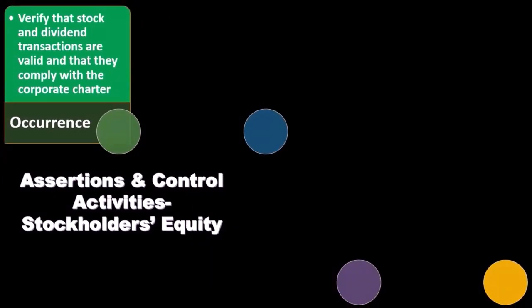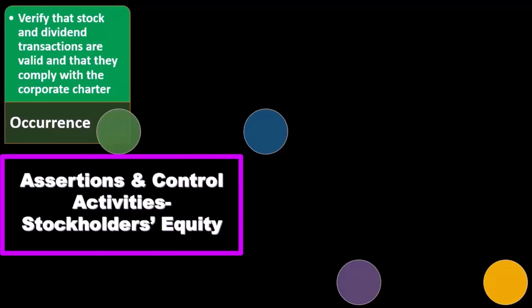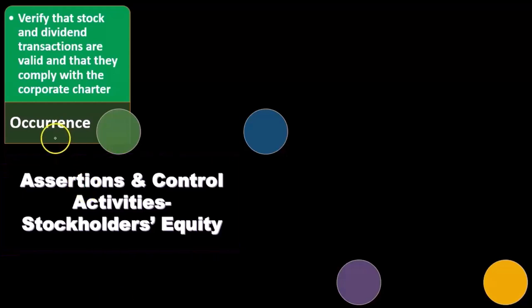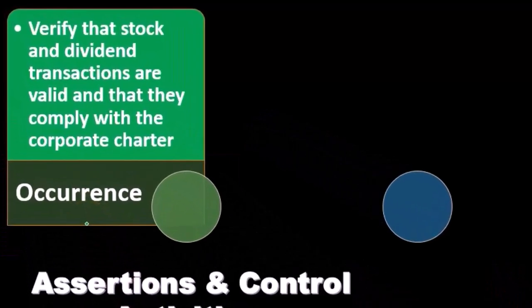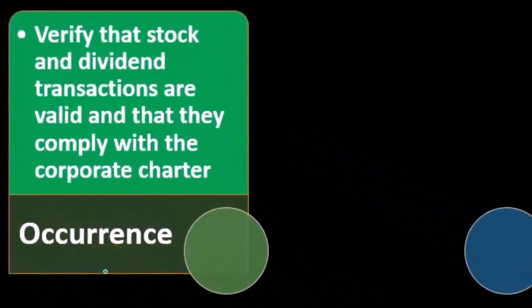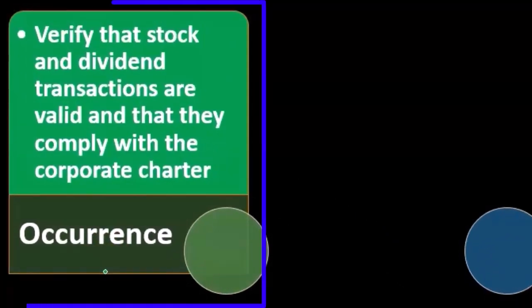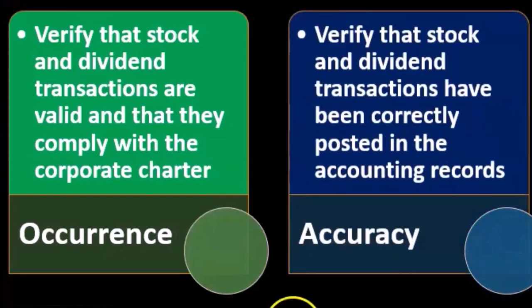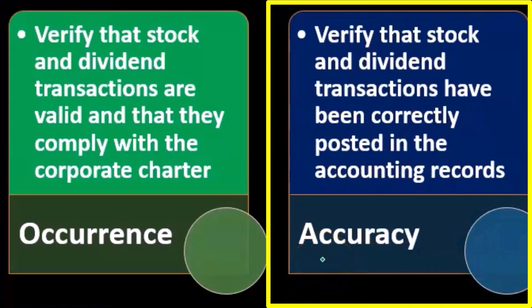Now we'll consider assertions and the control activities related to those assertions in regards to stockholders' equity. The first assertion is occurrence — verify that stock and dividend transactions are valid and that they comply with the corporate charter. The next assertion is accuracy — verify that stock and dividend transactions have been recorded correctly.